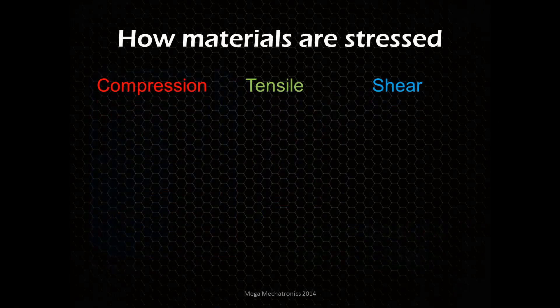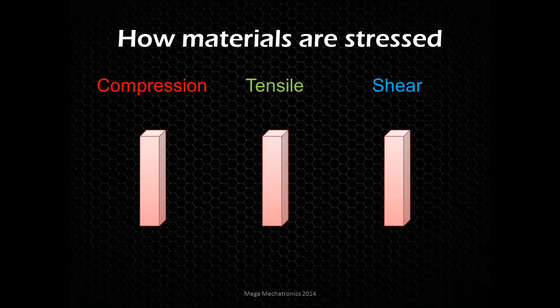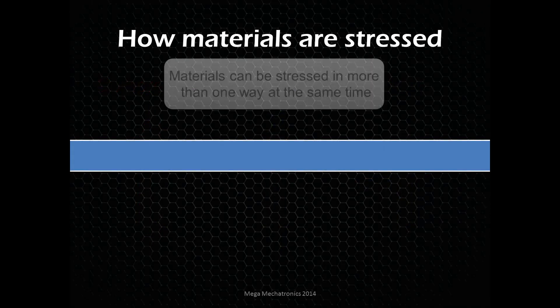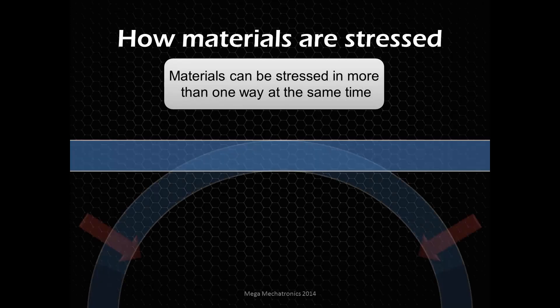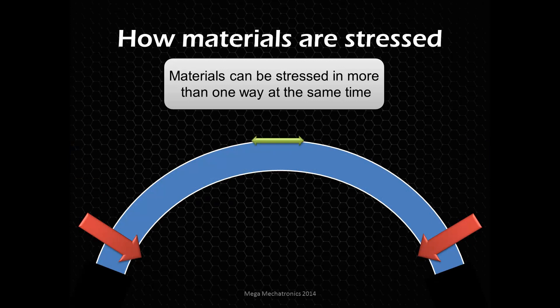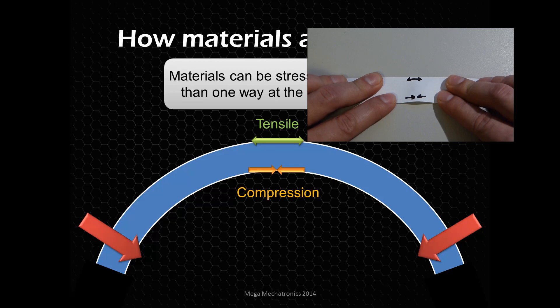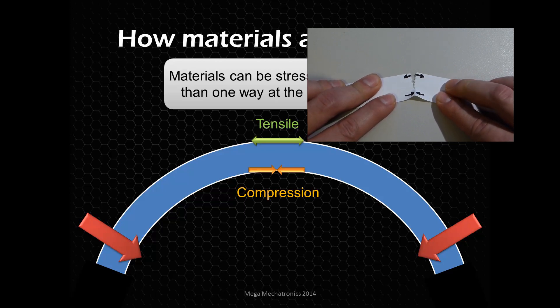So how are materials stressed? There are three basic ways: compression, where you're trying to smash that column together like building a snowball; tension, like when you pull on a rope; and shearing, where the arrows are slightly offset. If the arrows were in line that would be compression. If we have a beam and we bend it, it's experiencing more than one type of stress — tension up top and compression at the bottom. You can see with a piece of paper: it tears at the top because it's under tension, and the bottom side folds up because it's under compression.